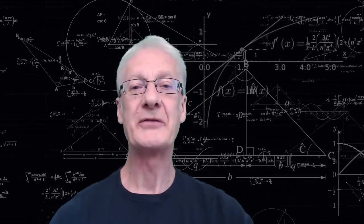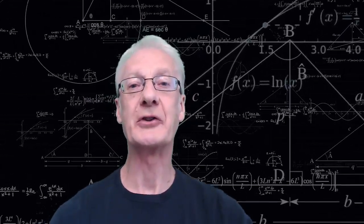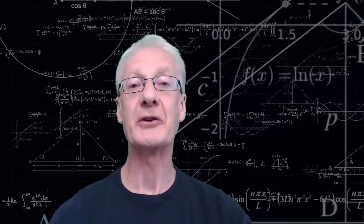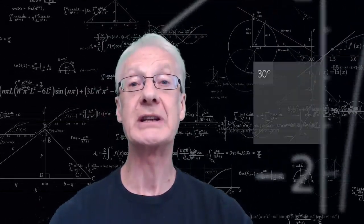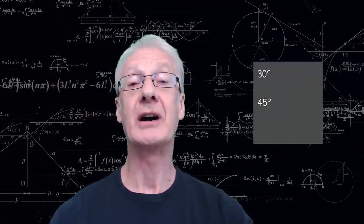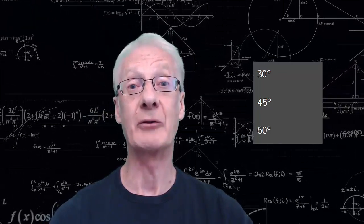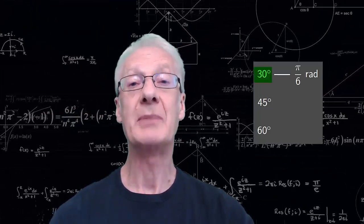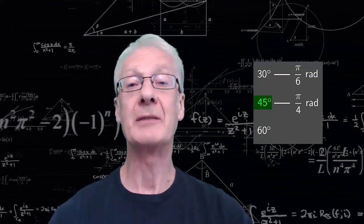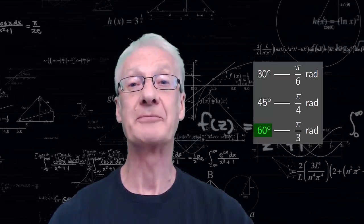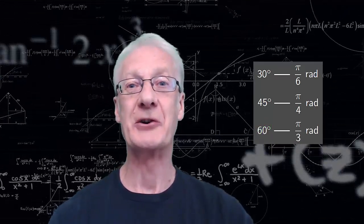Hi everyone. In this video we'll deduce the values of the trigonometric functions for the most important acute angles: 30, 45, and 60 degrees — or if you prefer thinking in radians, pi over 6, pi over 4, and pi over 3 radians. Are you ready? Let's go!